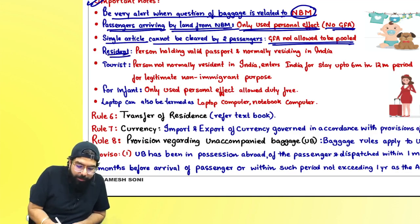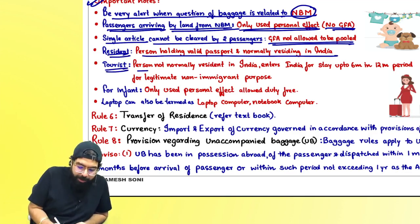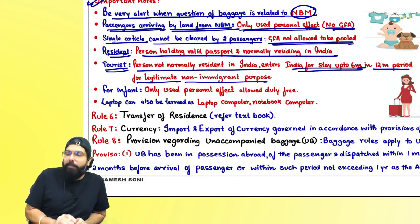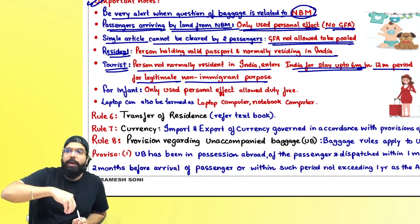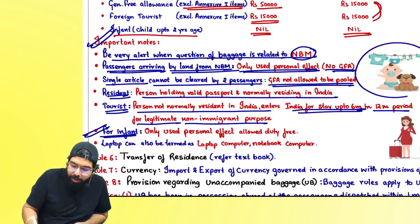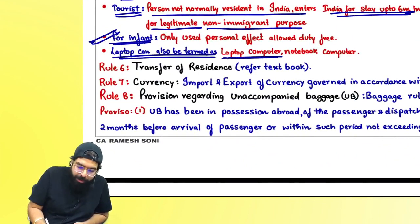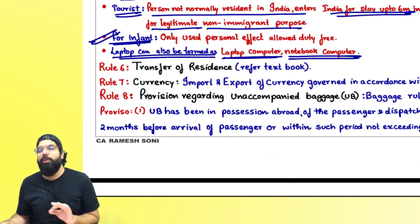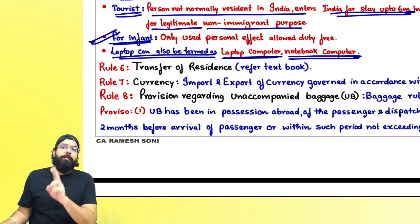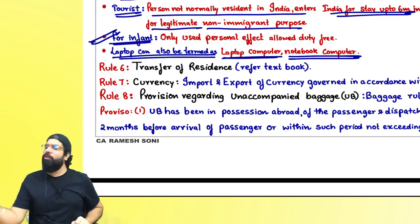Resident means a person holding a valid passport who is a normal resident of India. Tourist means a person who is not a normal resident of India and enters India for a stay up to six months in a 12-month period for legitimate non-immigrant purposes. Infant's allowance is personal effect only — toys, clothes, etc. Laptop in the exam may be called laptop computer or notebook computer — one laptop is allowed duty free. A desktop computer or personal computer must be cleared within the general free allowance or duty of 35% plus 10% applies.